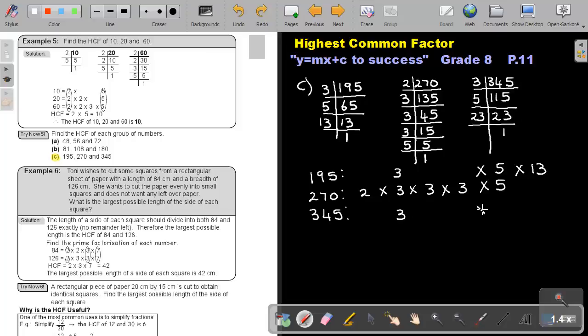And if I look, if I mark the column, I have a column of 3's, and I have a column of 5's. Therefore, the highest common factor will be 3 times 5, and that will give me an answer of 15.